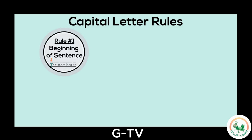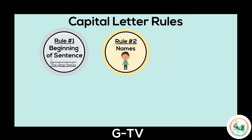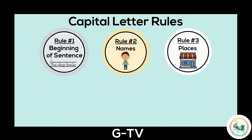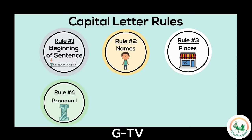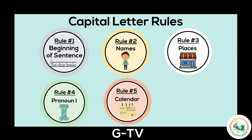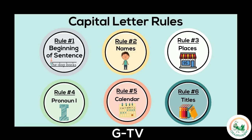Rule number one: write a capital at the beginning of a sentence. Rule number two: write a capital for names. Rule number three: write a capital for places. Rule number four: write a capital when using the pronoun I. Rule number five: write a capital for calendar words. And rule number six: write a capital letter for titles. These are a lot of rules to remember, so let's take a peek at each one.